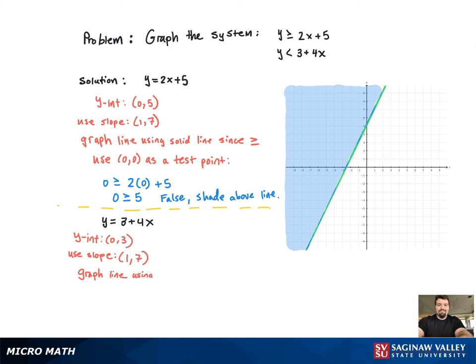Now when we go to graph it again, we have to check to see if it's solid or dashed. But since it's strictly less than, that means it's going to be dashed. See the strictly less than symbol?